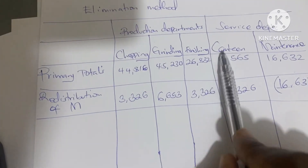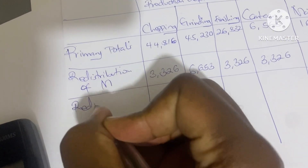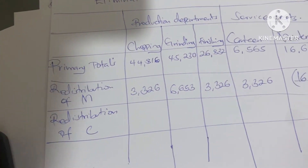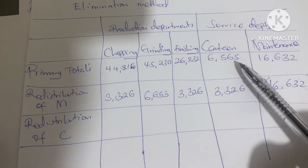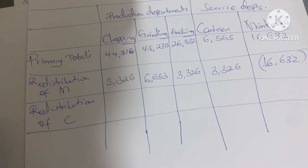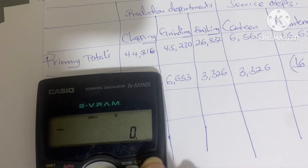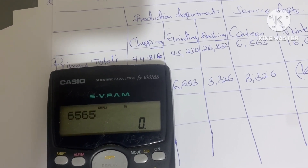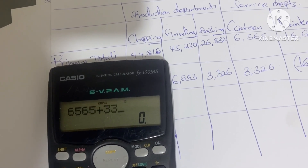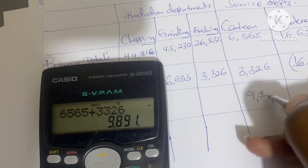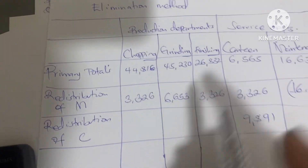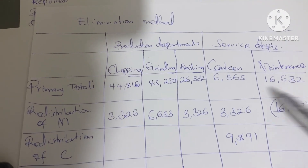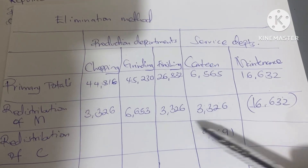Next we are going to distribute for canteen — redistribution of canteen. Since we've already added the amount distributed to canteen, we add the original canteen figure of 6565 plus the 3326 received from maintenance to get the new total to redistribute: 9891.